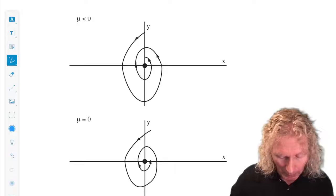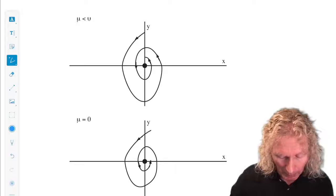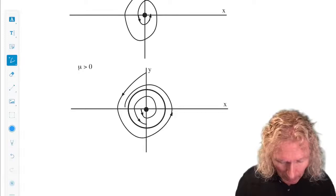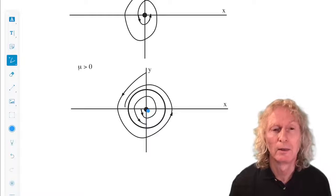For mu equals zero, there's only a fixed point. It's non-hyperbolic, still stable. You can check that from the equations. For mu greater than zero, the fixed point becomes unstable. It is surrounded by a stable periodic orbit.